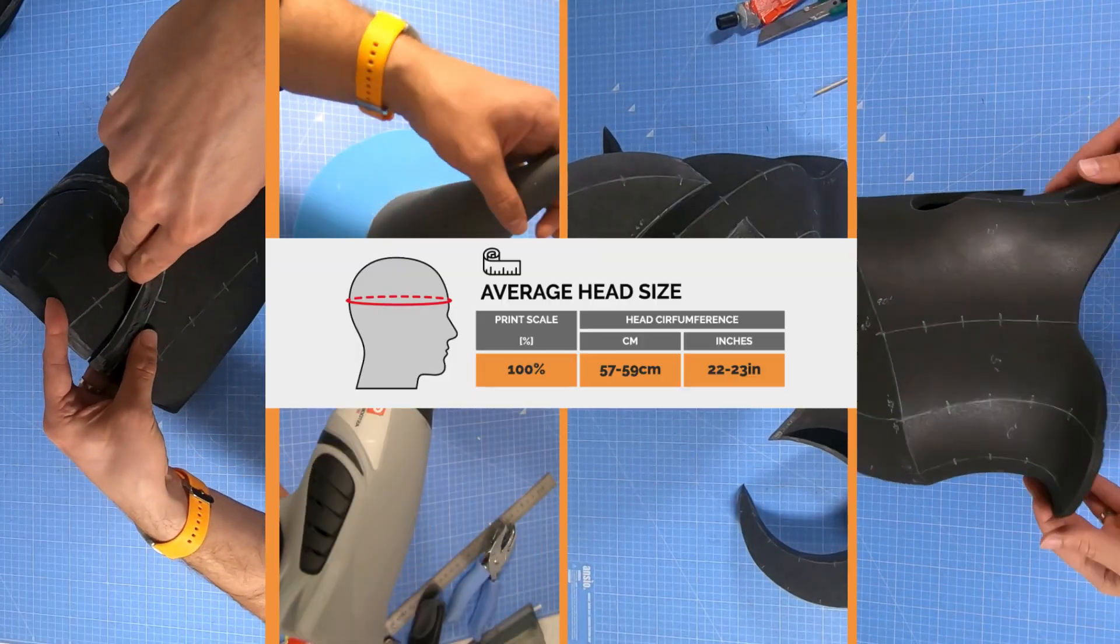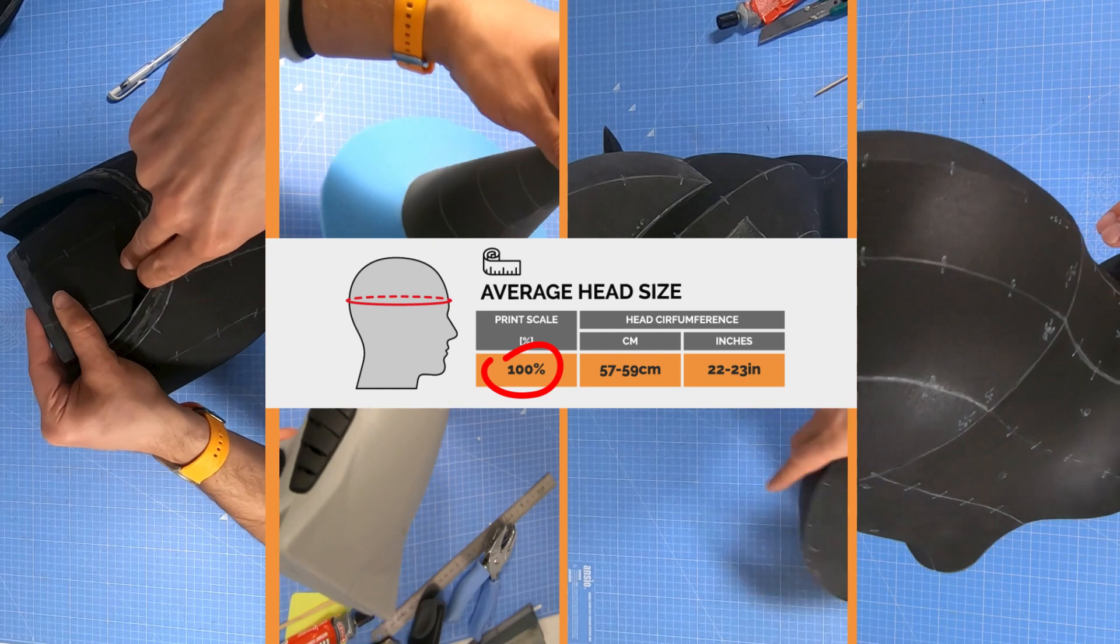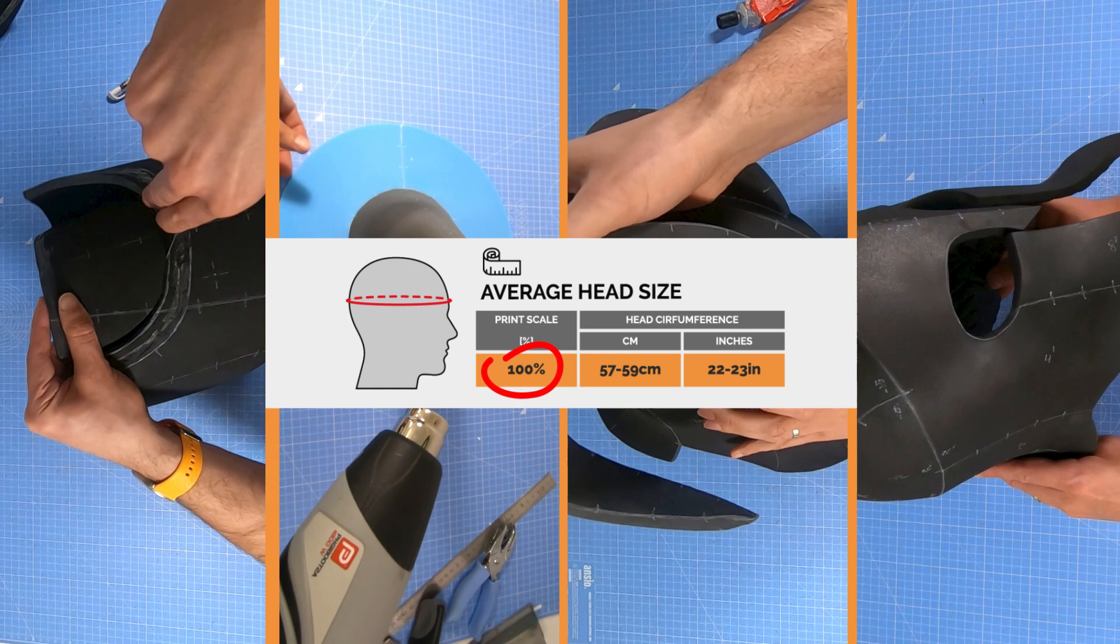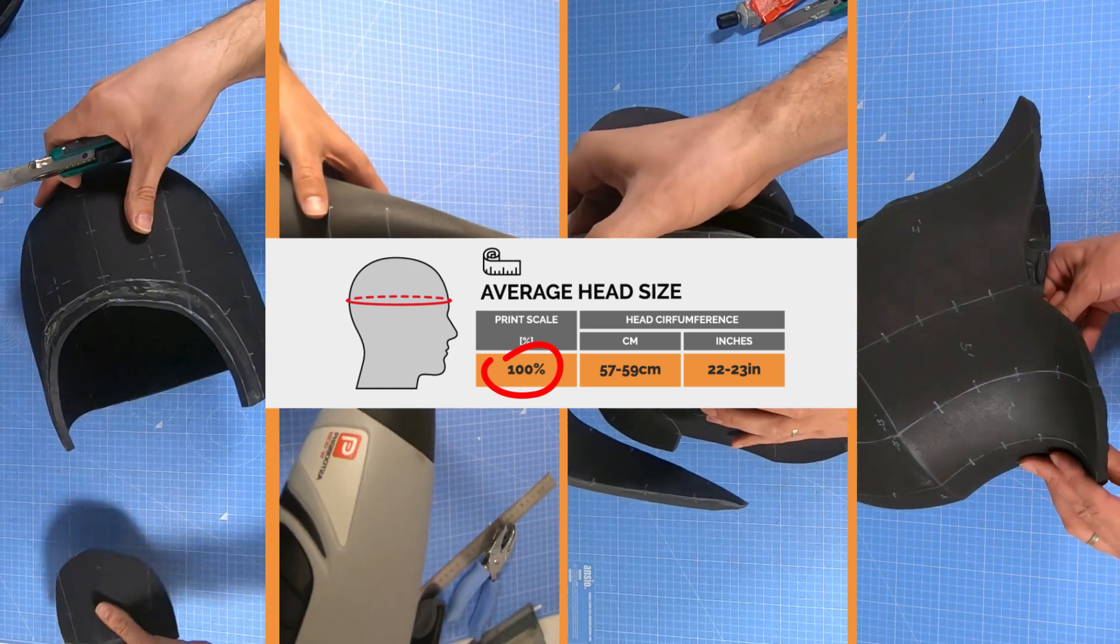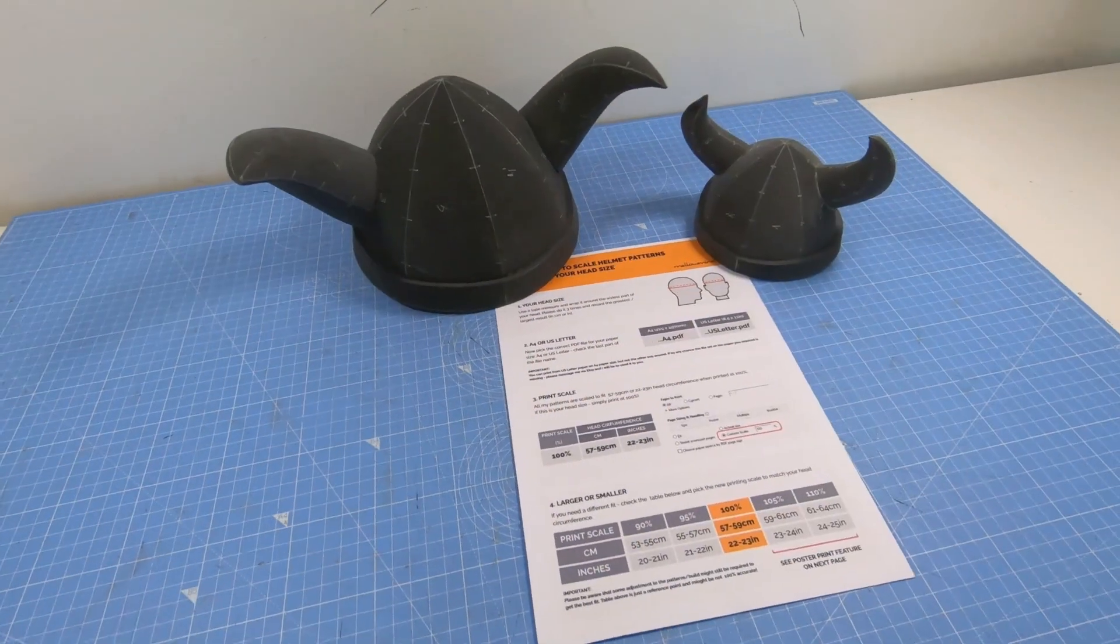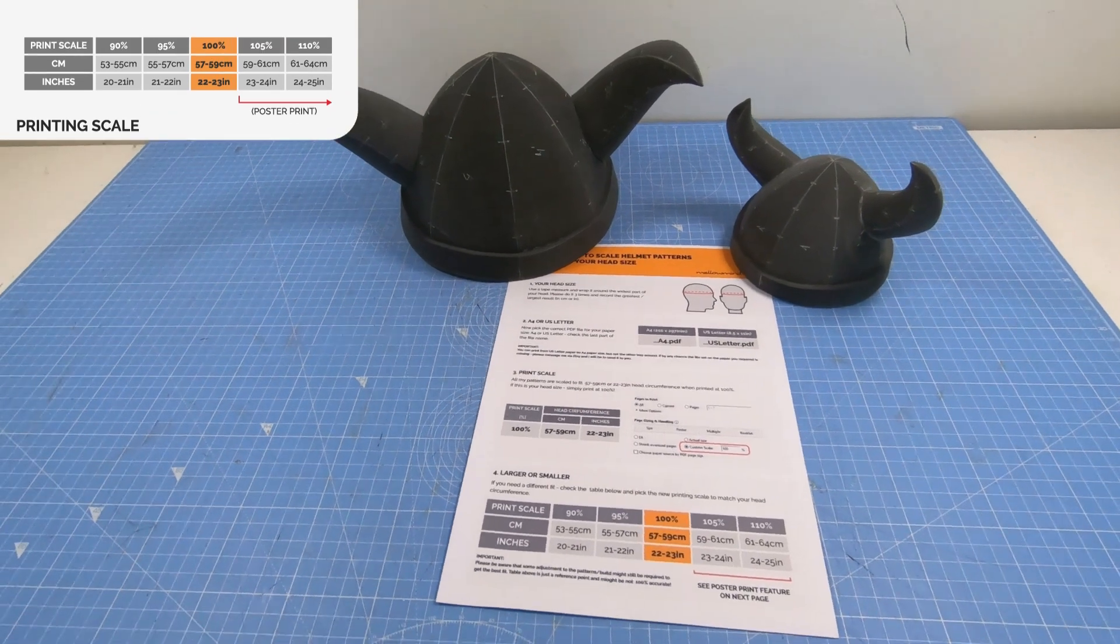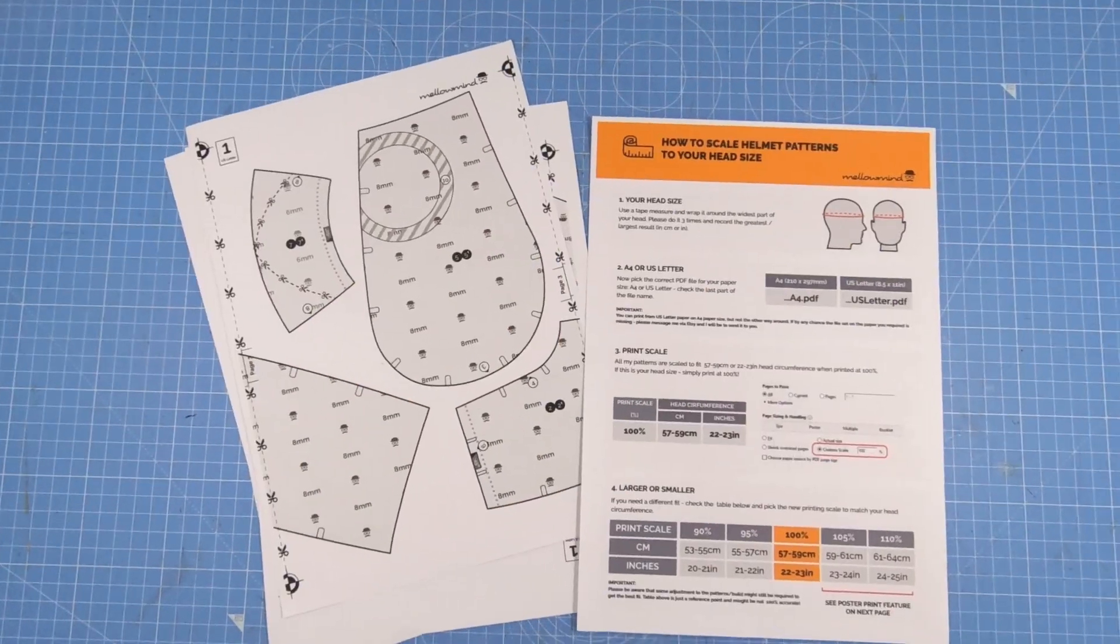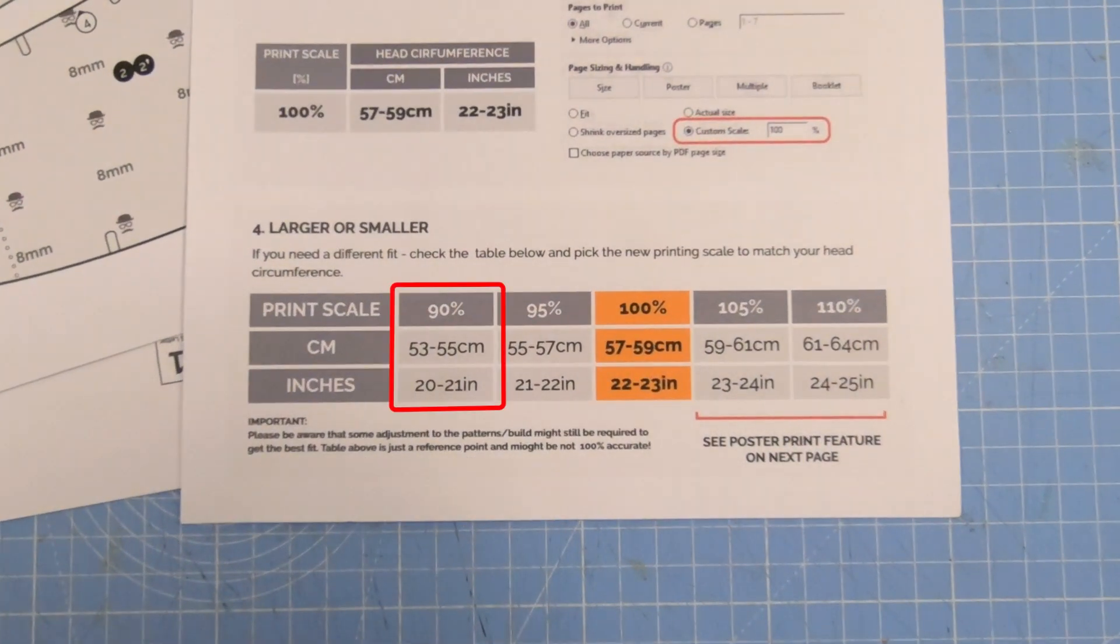All my DIY foam patterns at 100% printing scale are designed to fit the average head size. However, the standard size might not be right for you. If you require a smaller or bigger size, please refer to the size chart enclosed with the pattern. For example, a 54 cm head will require a 90% printing scale.